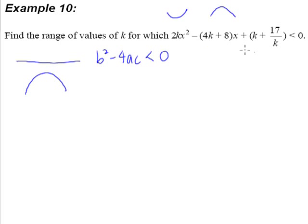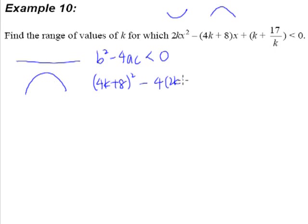So let us take a look at what we have here. The coefficient of x² is obviously a, our coefficient of x will be b, and of course the constant term will be c. So we know that our discriminant will always be less than zero because there is no intersection. So our b² minus 4ac will be always less than zero, because our discriminant is less than zero and we are supposed to find the range of values of k.